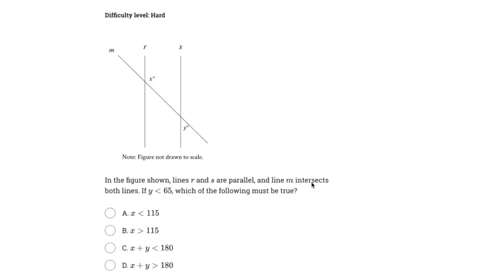So we want to be thinking about vertical angles, alternate interior angles, all that stuff. If Y is less than the value of 65, which of the following must be true?